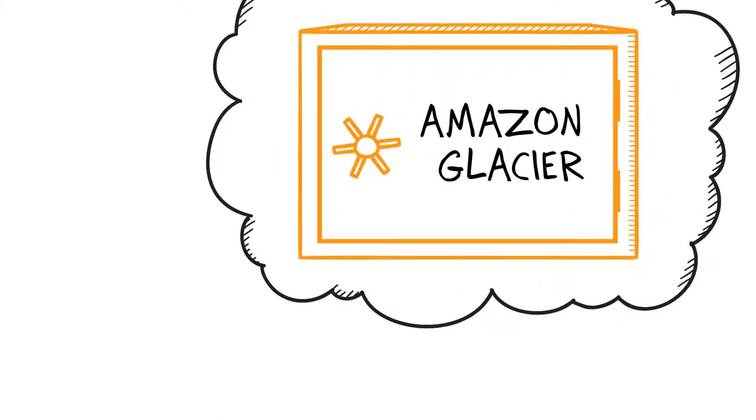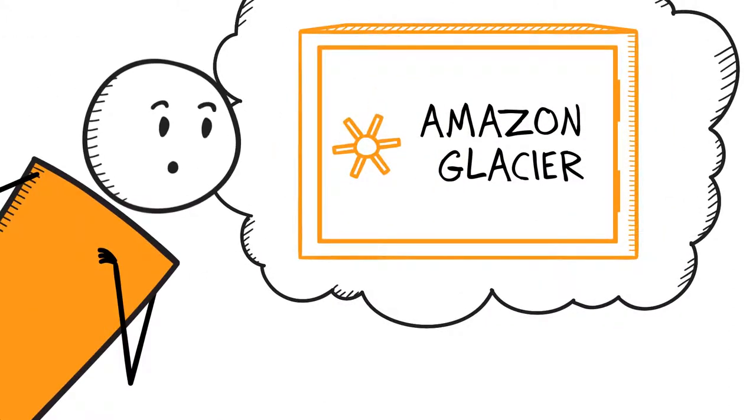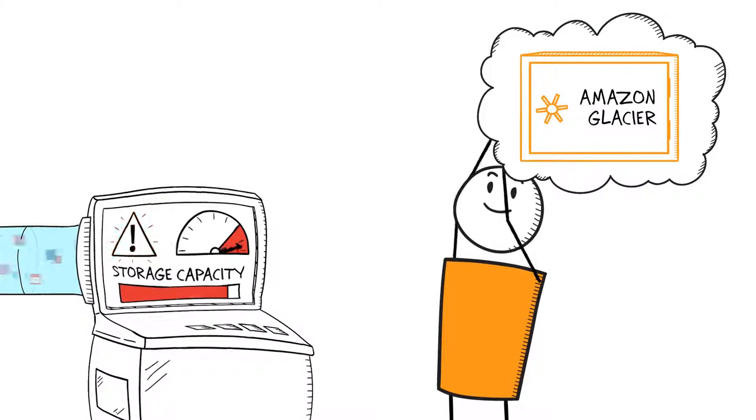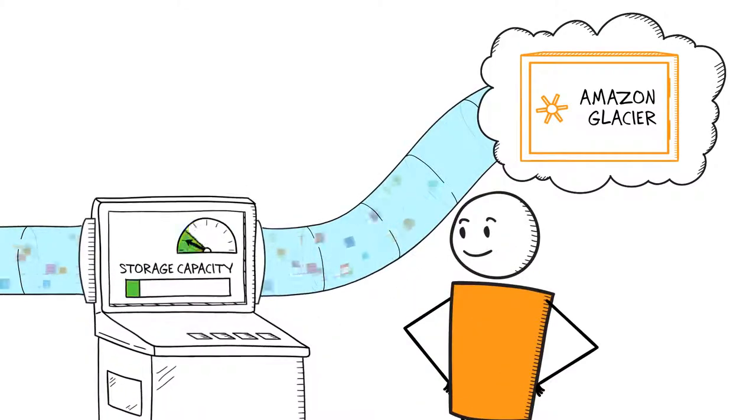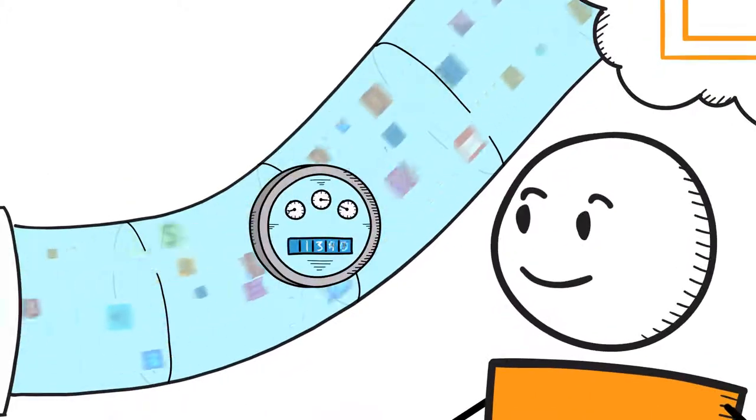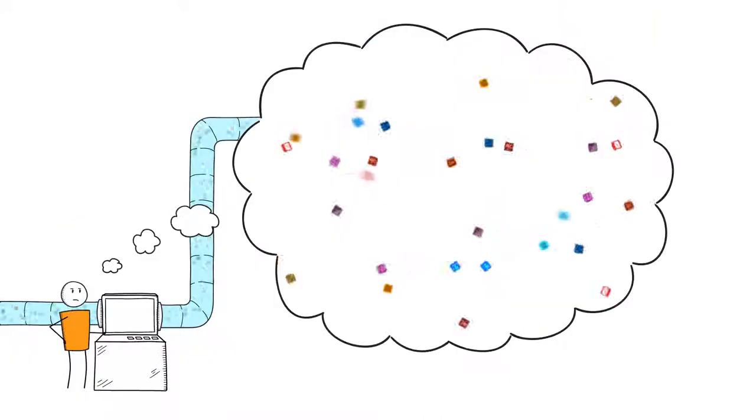With Glacier, you can reliably store large or small amounts of data for as little as a penny per gigabyte per month, and there's no limit on how much data you can store. You only pay for what you use, so you don't have to try to predict the future and pay for storage you don't need.